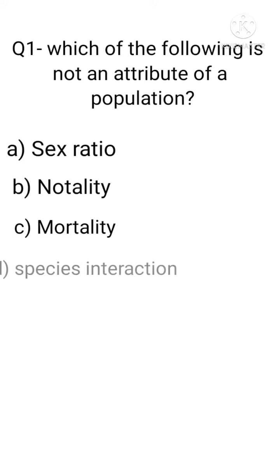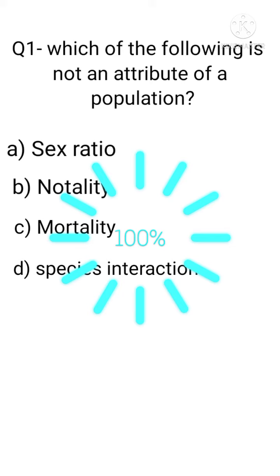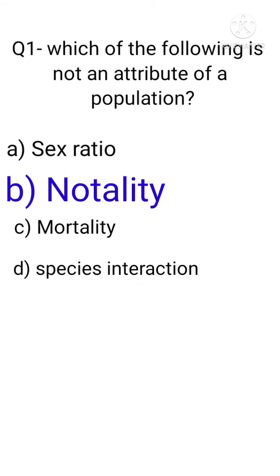So think about what should be the answer. The correct answer is natality because natality is not an attribute of population, it is a population interaction, while the other three are population attributes.